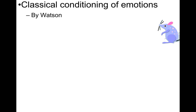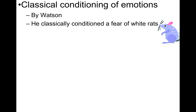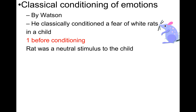Speaking of people, there's a very famous study that John Watson conducted where he classically conditioned a child, Little Albert, to be afraid of white rats. He wanted to see if you could make a tiny child terrified of a white rat through classical conditioning. Before conditioning, he established that the rat was a neutral stimulus — like most children, Little Albert was actually attracted to the rat; it looked like a neat little toy to him and didn't elicit any fear reaction whatsoever.